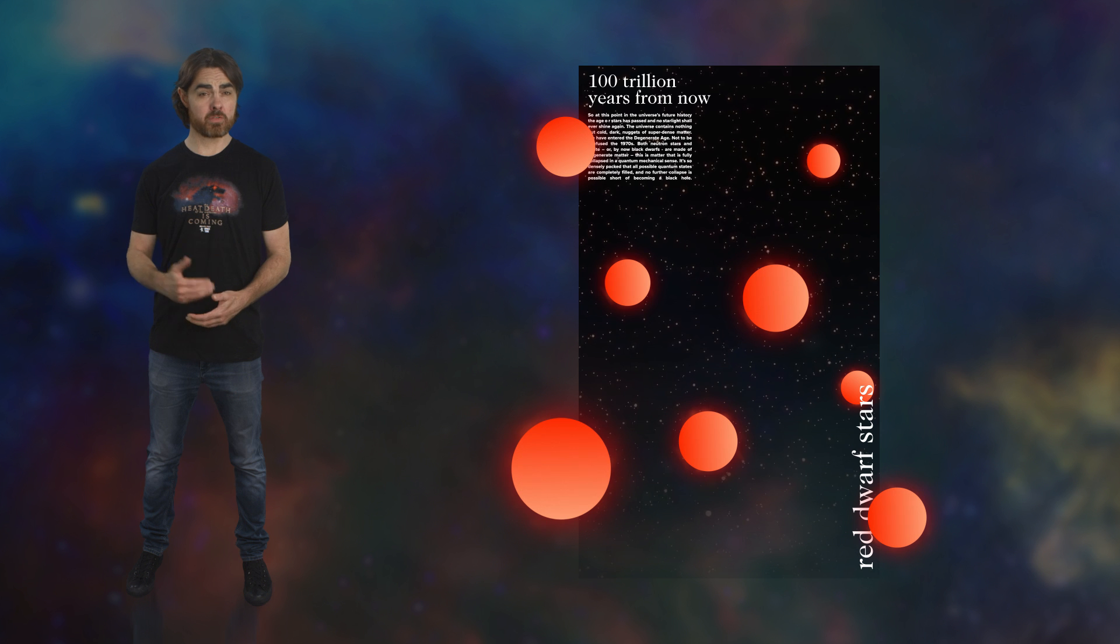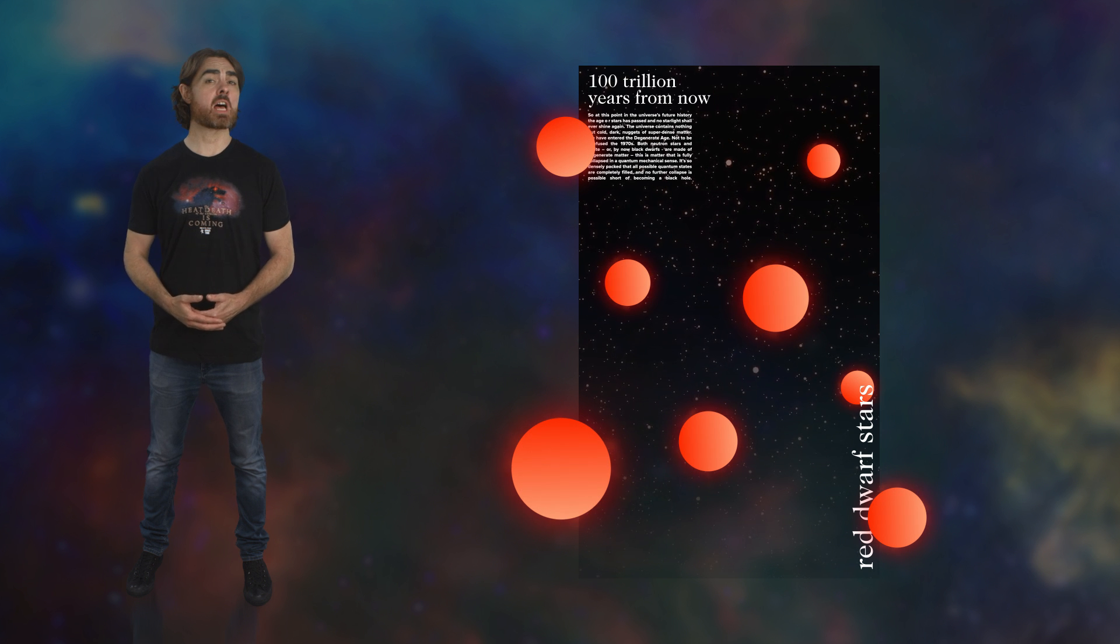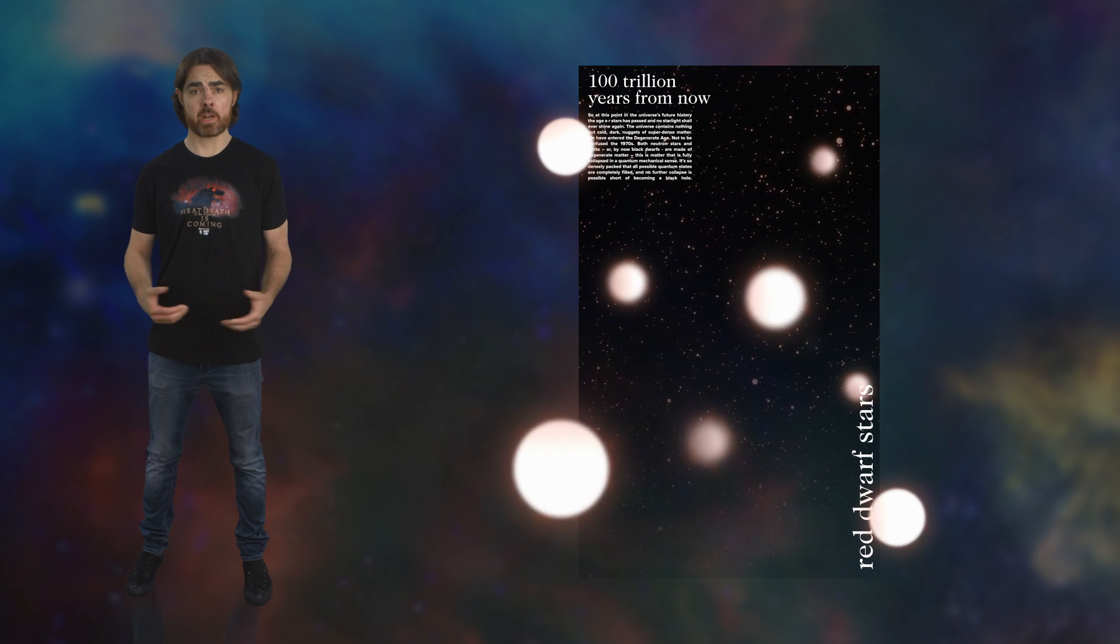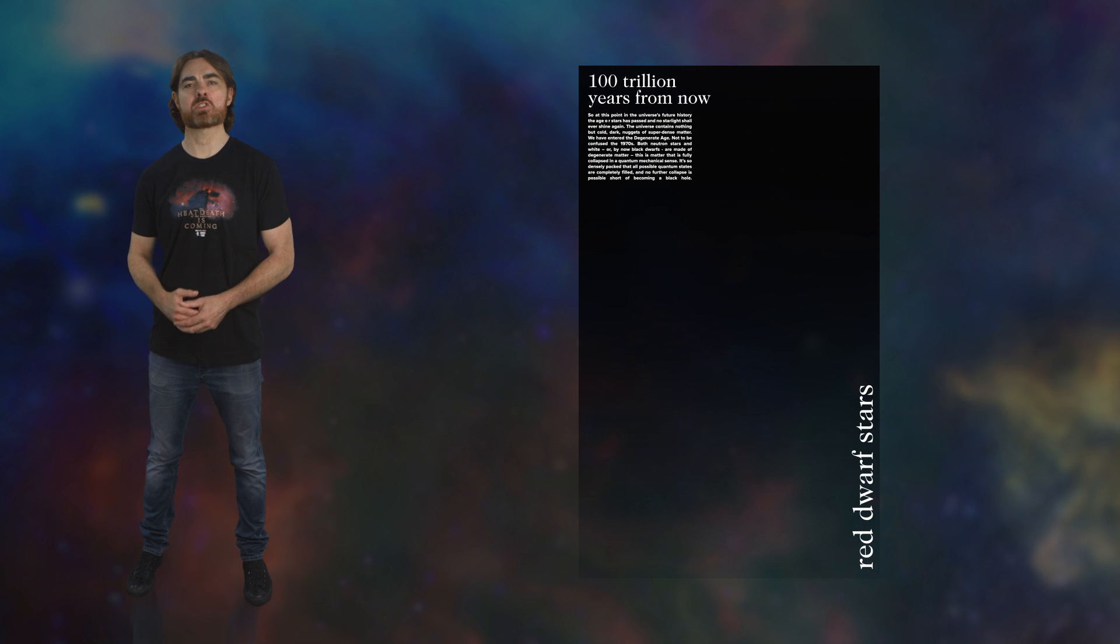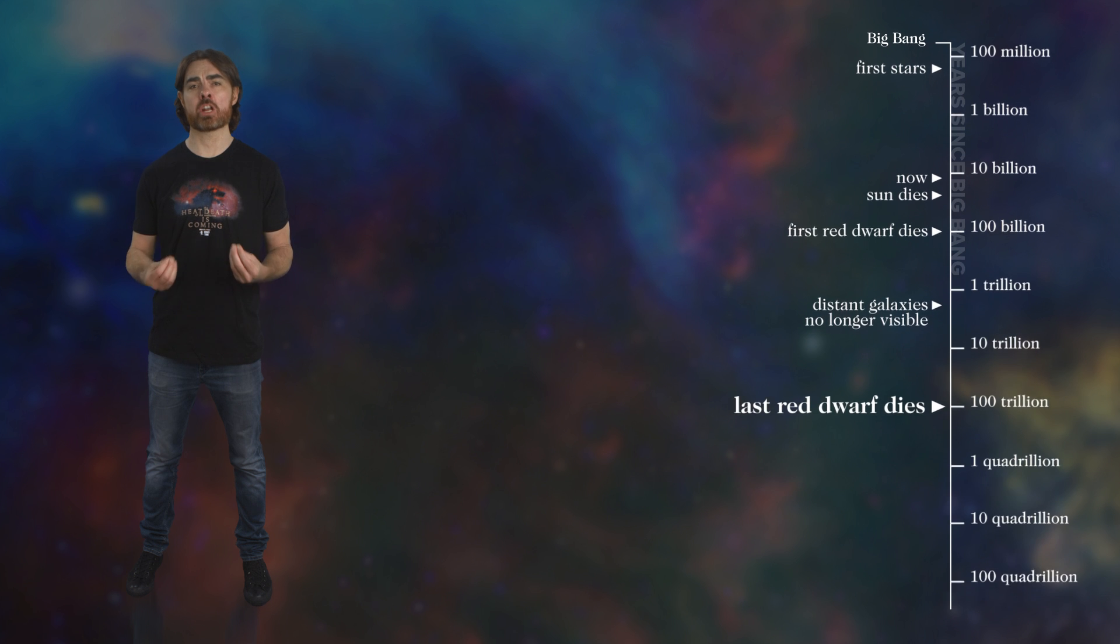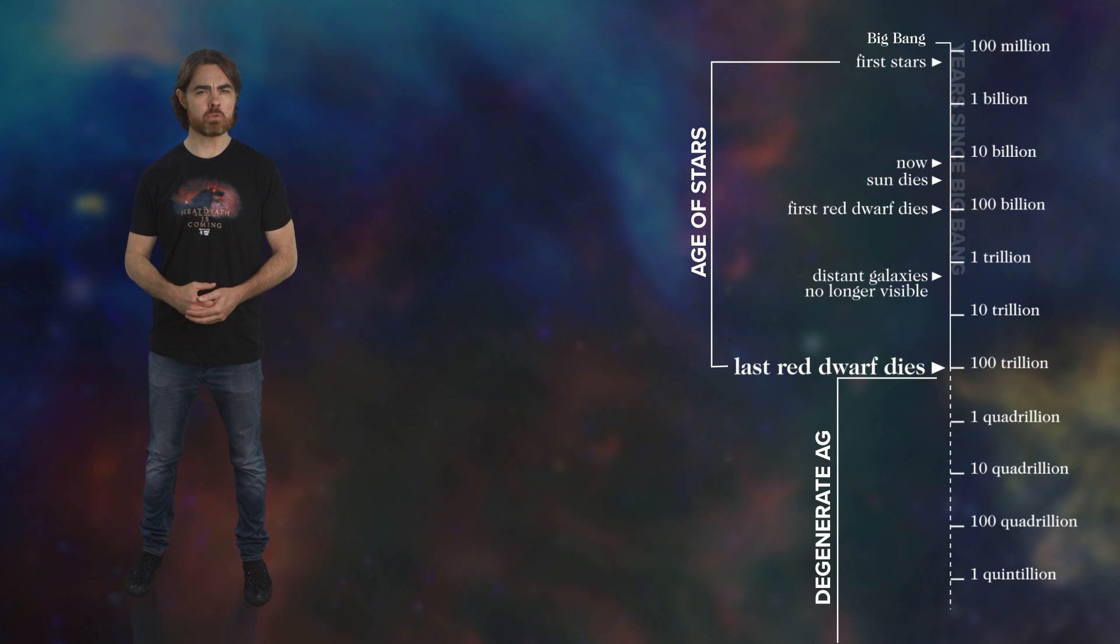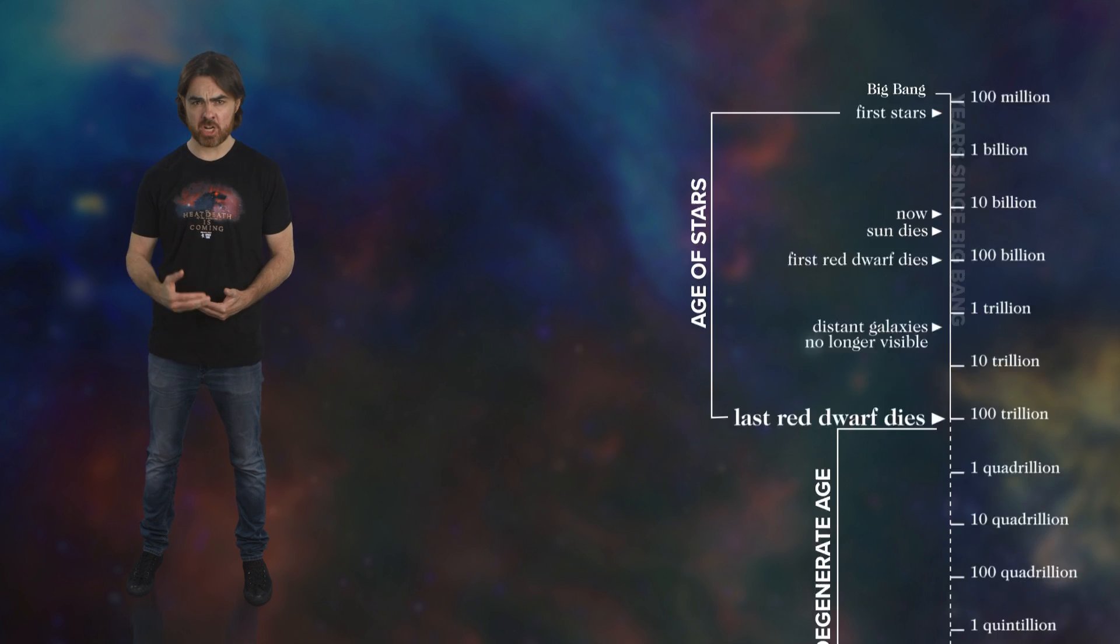So at this point in the universe's future history, the age of stars has passed, and no starlight will ever shine again. The universe contains nothing but cold, dark nuggets of superdense matter. We have entered the degenerate age, not to be confused with the 1970s. Both neutron stars and white, or by now black dwarfs, are made of degenerate matter. This is matter that is fully collapsed in a quantum mechanical sense. It's so densely packed that all possible quantum states are completely filled, and no further collapse is possible short of becoming a black hole.